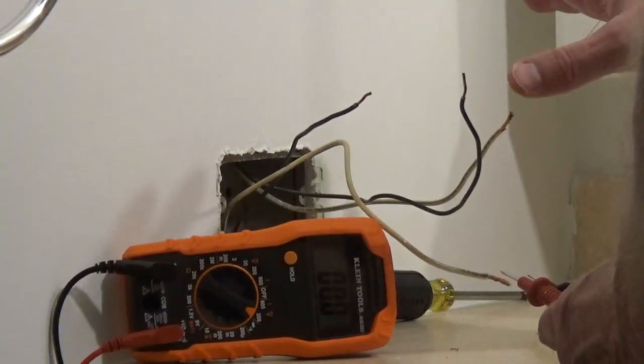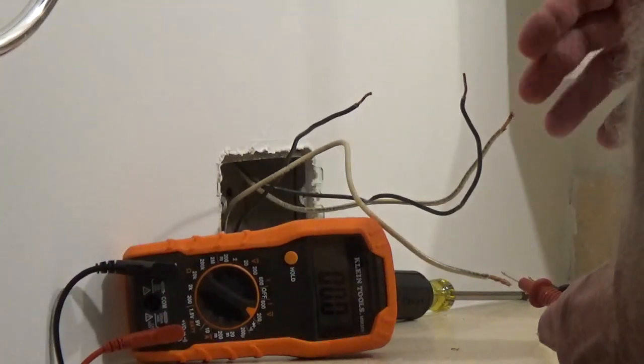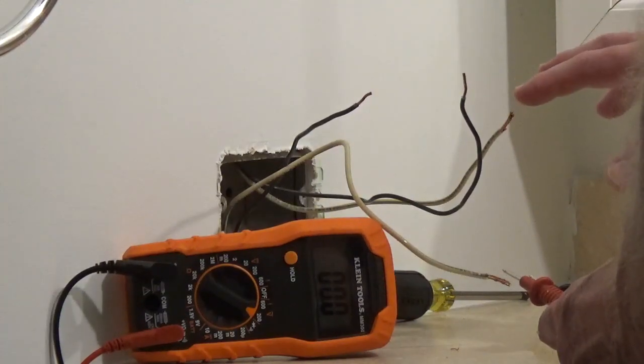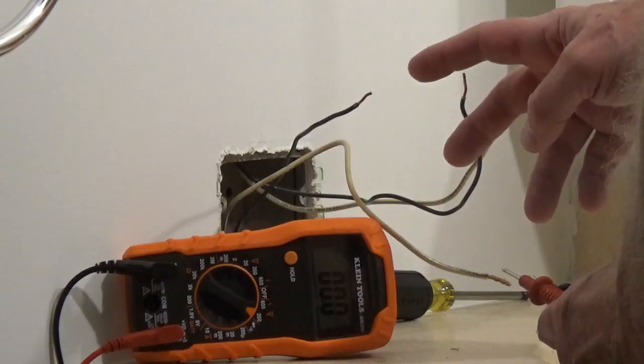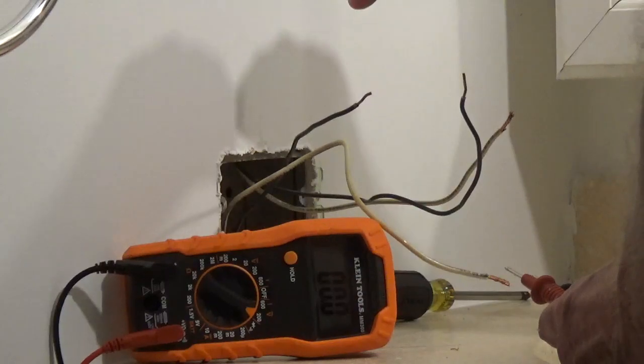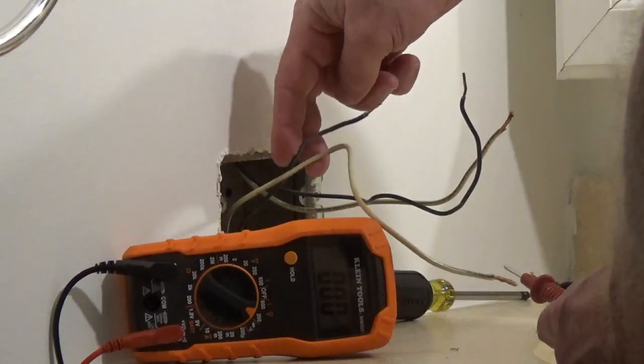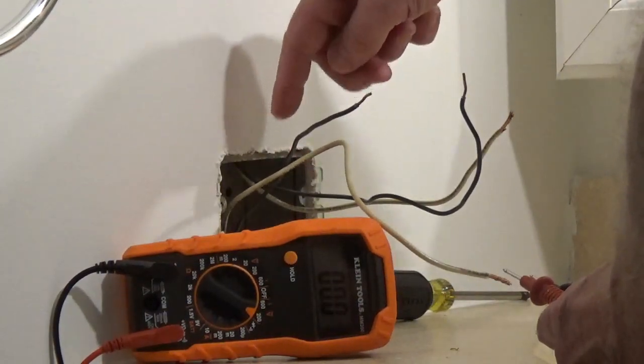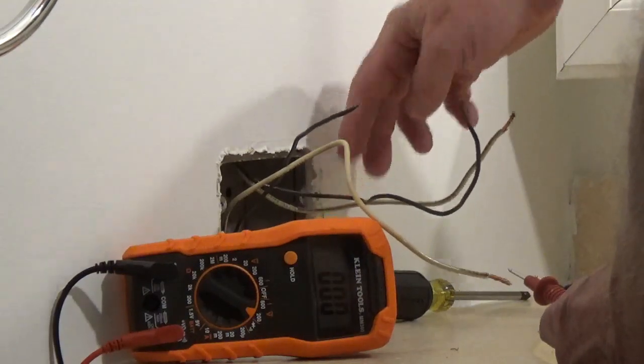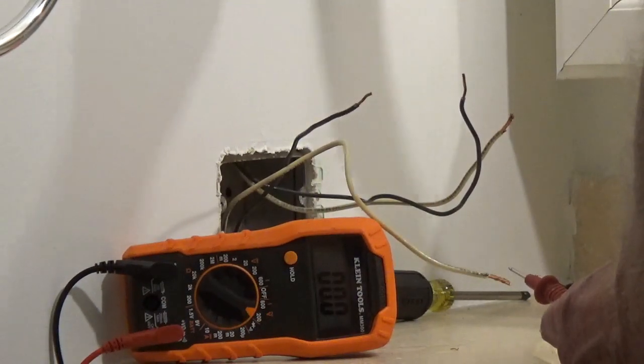If you have four wires with a ground or four wires and no ground, we need to find which two wires are the line side and which two are the load side. When you look in your box, we can see that these two wires are coming in one side of the box and these two wires are a matched pair coming in from another side of the box.